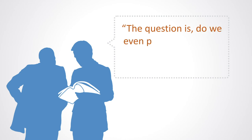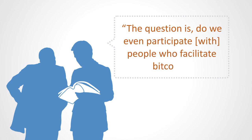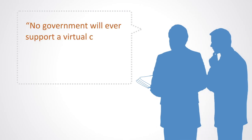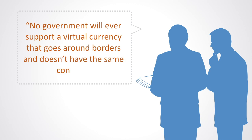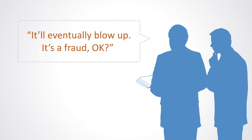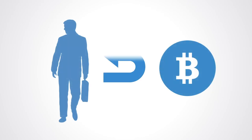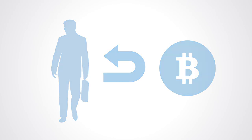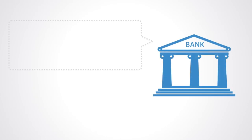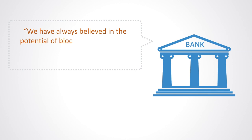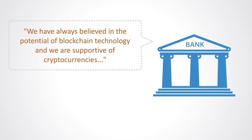As he said, 'The question is, do we even participate with people who facilitate Bitcoin?' Shortly after, he said, 'No government will ever support a virtual currency that goes around borders and doesn't have the same controls,' adding, 'It's not going to happen.' A little after, he came to the conclusion that, 'It'll eventually blow up. It's a fraud.' The subsequent years saw a transition from denial and resistance to acceptance, until by 2019, J.P. Morgan had made a complete U-turn when the head of digital treasury services and blockchain at the bank said, 'We have always believed in the potential of blockchain technology, and we are supportive of cryptocurrencies.'